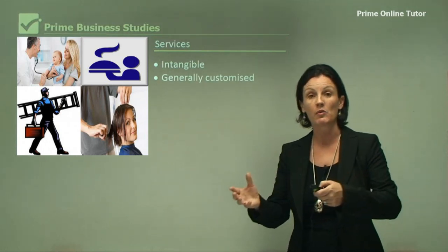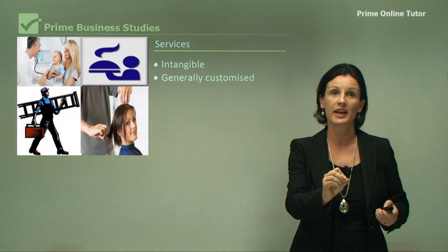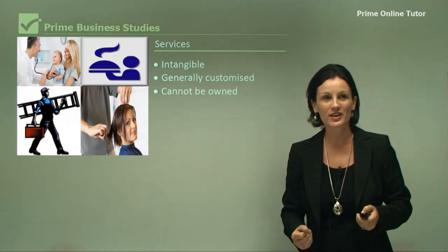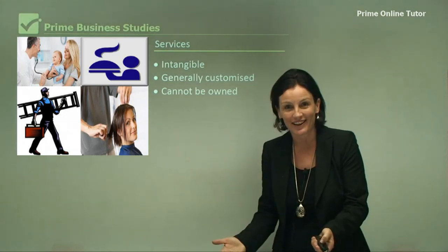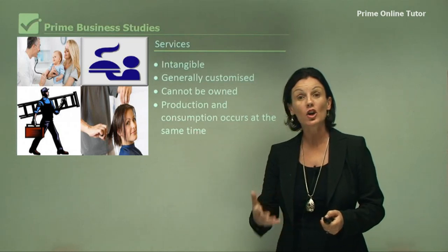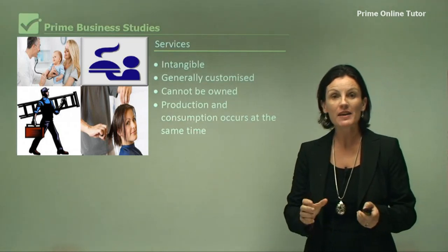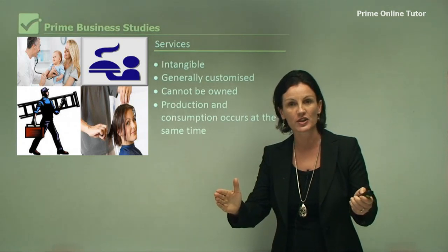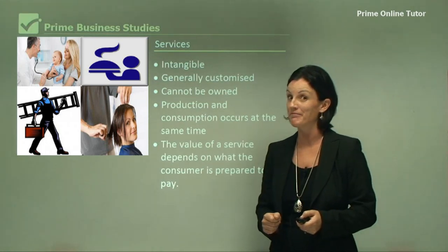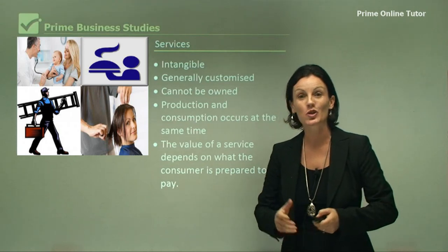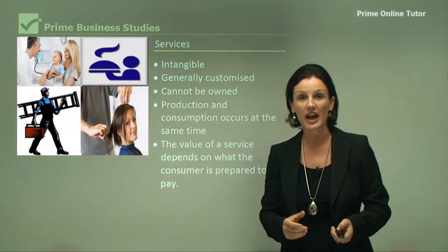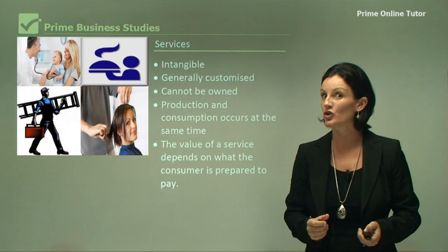Someone might want a short haircut, someone might want a long haircut, someone might want their hair dyed or permed. A haircut cannot be owned — we don't walk out of the hairdresser and own our haircut; we can't then resell our haircut. The production and consumption occurs at the same time. So if I go to the dentist, that's a service — I am there the entire time of that operations process. The value of a service depends on what the consumer is prepared to pay. Some people want their hair cut to cost $20, other people are prepared to pay $250. Consumers are very different and so a business must adapt to what their consumer is prepared to pay.